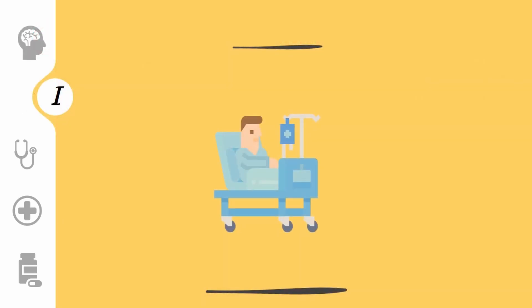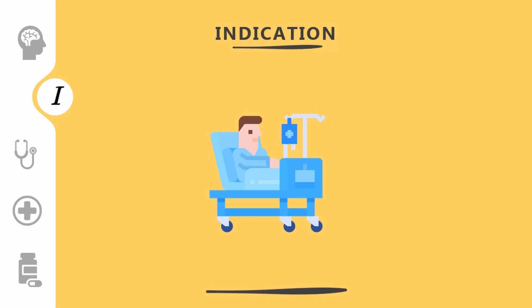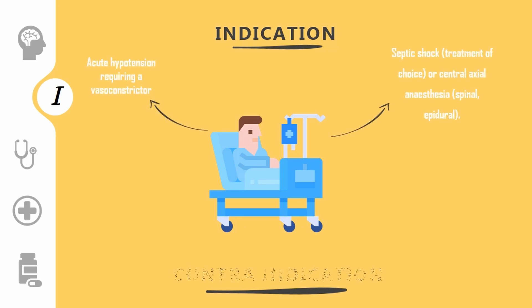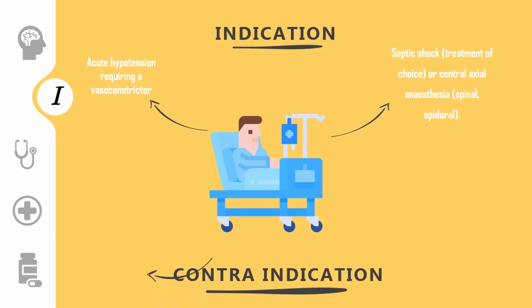It's time to know about indication and contraindication. The indication of the drug is acute and critical hypotension. Regarding contraindication, there are no absolute contraindications, but it should be avoided in hypertensive patients and in hypotension caused by hypovolemia.